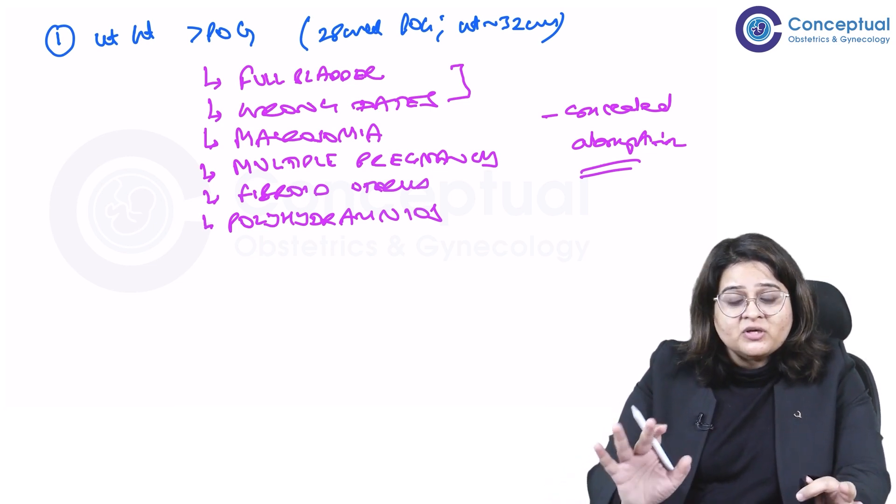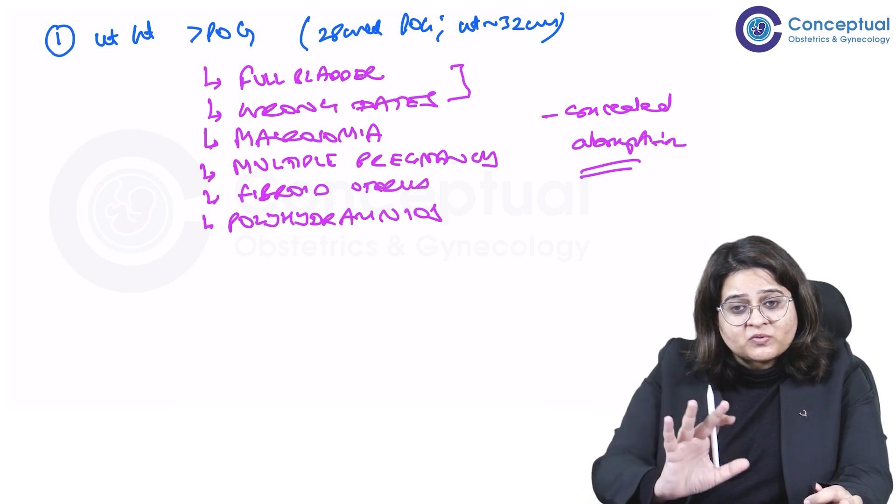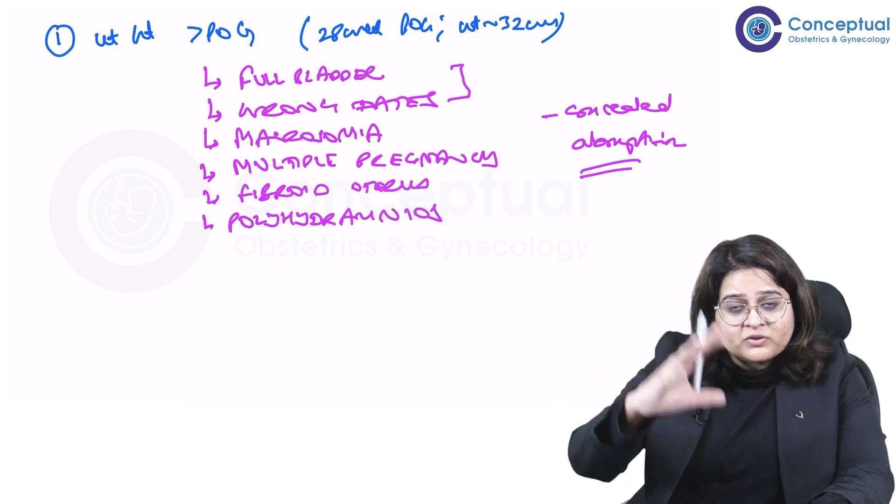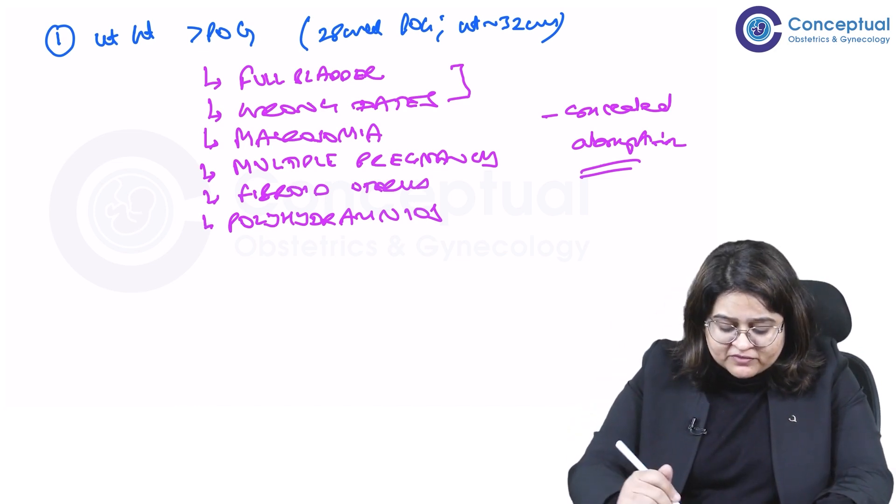So in a concealed abruption or a mixed abruption where there is both revealed and concealed, you will find blood retro-placental collection, and that's how the uterus looks bigger than the period of gestation.